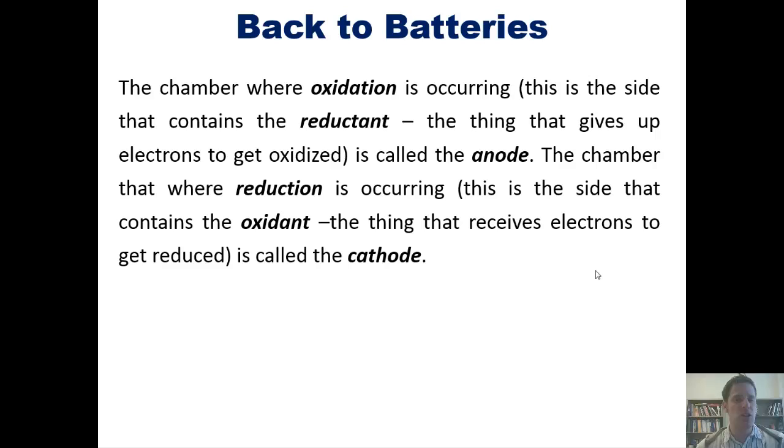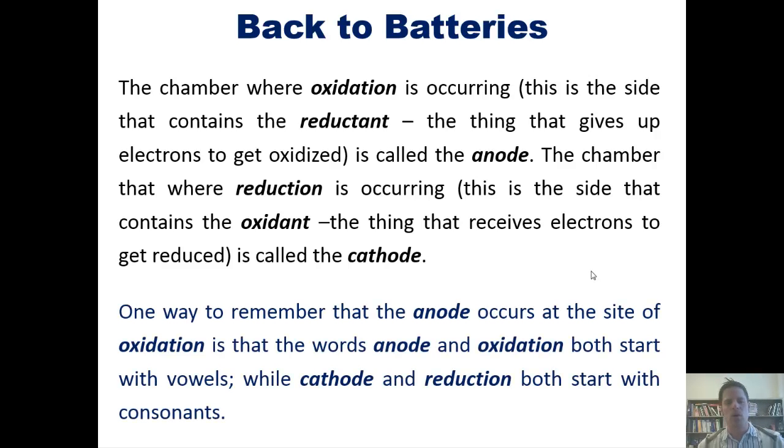The chamber where oxidation is occurring, this is the side that contains the reductant, the thing that gives up electrons to get oxidized, is called the anode. The chamber where reduction is occurring, this is the side that contains the oxidant, the thing that receives electrons to get reduced, is called the cathode. One way to remember that an anode occurs at the site of oxidation is that the words anode and oxidation both start with vowels, while cathode and reduction both start with consonants, at least in English anyway.